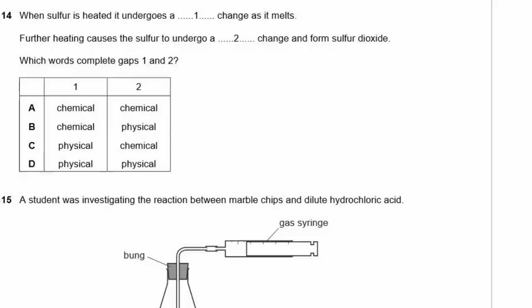Question 14. When sulfur is heated, it undergoes a physical change as it melts. Further heating causes sulfur to undergo a chemical change and form sulfur dioxide. Melting is a physical change because it remains as sulfur in a different state. When sulfur reacts with oxygen to form sulfur dioxide, it's a chemical change because it becomes a different chemical. The answer is C.